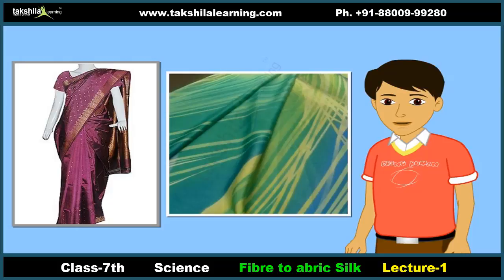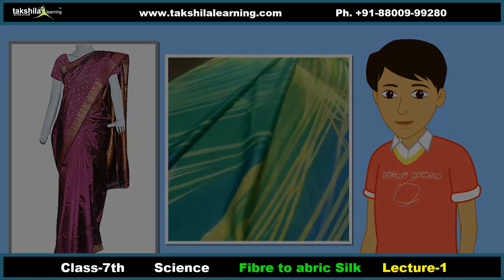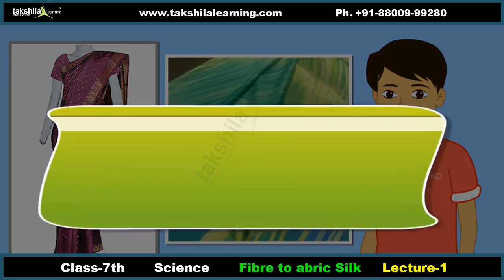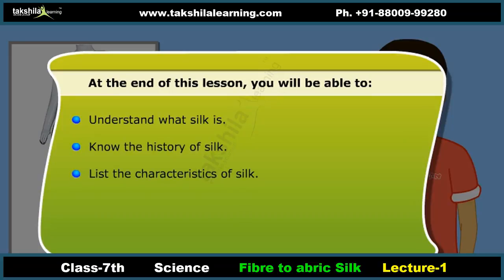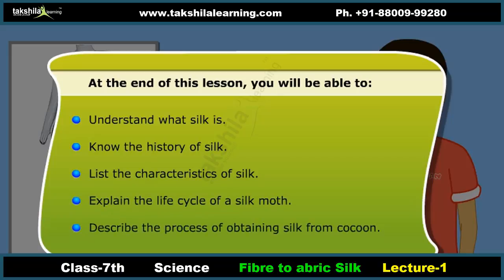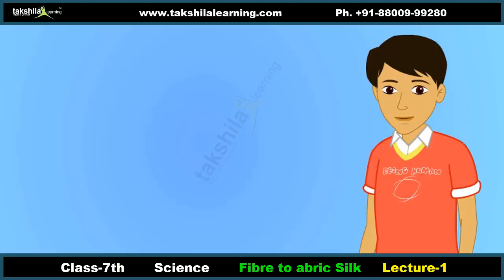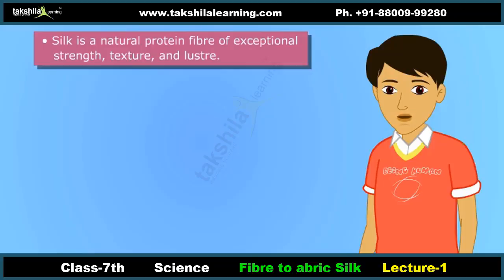In this lesson we will learn about the characteristics and types of silks and also understand how the silk fabric is obtained from silk worms. At the end of this lesson you'll be able to understand what silk is, know the history of silk, list the characteristics of silk, explain the life cycle of a silk moth, and describe the process of obtaining silk from a cocoon.